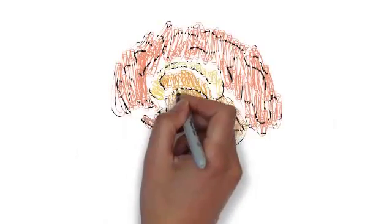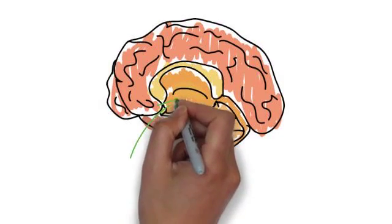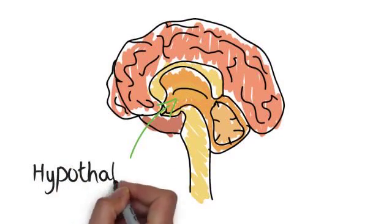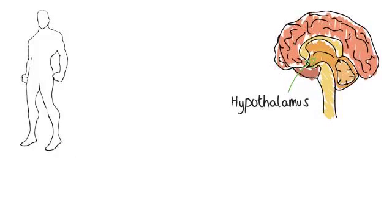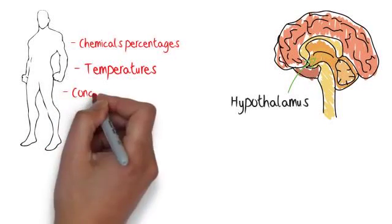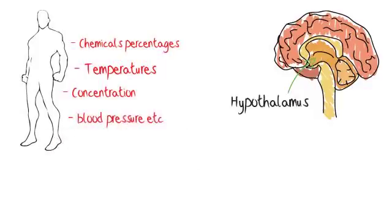The hormonal system is also controlled by our nervous system. A part of our brain is called the hypothalamus. This is basically our control sensor. It regulates all of the levels of our body, including the percentage of chemicals, temperatures, concentration, and blood pressure. If anything goes out of balance, this part of the brain sends out messages through different glands and chemicals for our body to make changes.